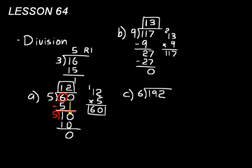Let's do 192 divided by 6. 6 doesn't go into 1, but it goes into 19 three times — 6 times 3 is 18. Subtract to get a remainder of 1, then bring the 2 down to get 12. 6 goes into 12 exactly 2 times — 6 times 2 is 12. Subtract and remainder is 0. Our answer is 32.